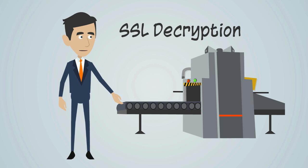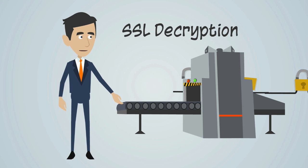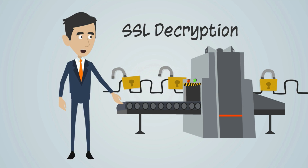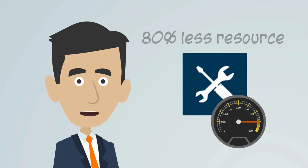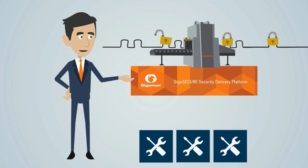Gigamon's security delivery platform can also decrypt SSL traffic, so security devices can see malware that might be embedded inside it. Offloading SSL decryption to a security delivery platform can save as much as 80% of your system's resources. And traffic only needs to be decrypted once before being sent to all of the security systems that need to see it.